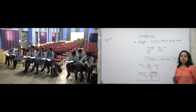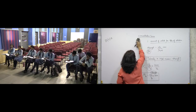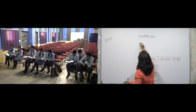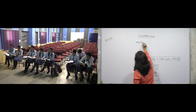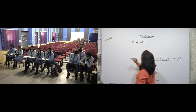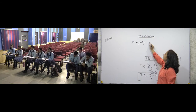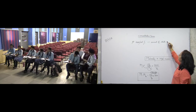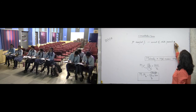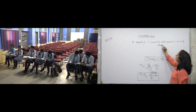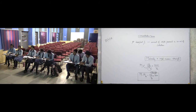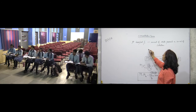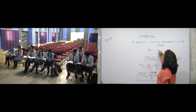Next is mass by volume percentage. Mass by volume percentage is the amount of solute present in 100 millilitres of solution. Mass by volume percentage is equal to weight of solute divided by volume of solution, multiplied by 100.